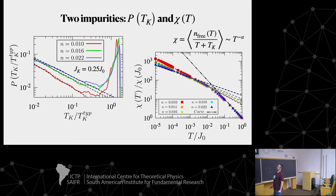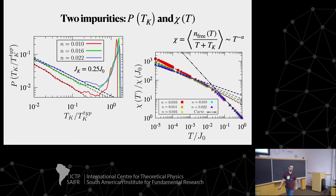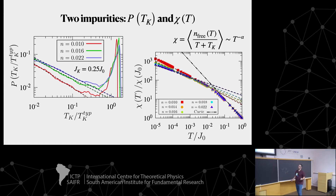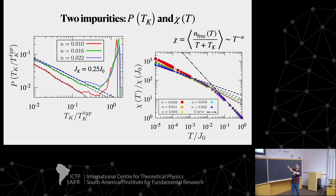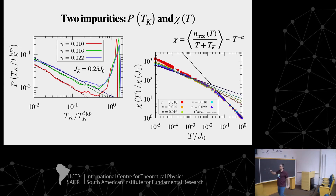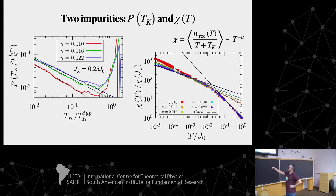The distribution of Kondo temperatures for the two-impurity problem still gives a power law, but now the power law depends on N — on the dopant density. This N-dependence comes from the coupling J_AB between the two impurities: as P(J_AB) changes with N, this translates into a dependence of the power-law exponent on dopant density.